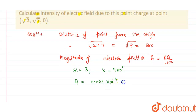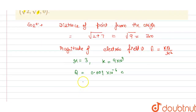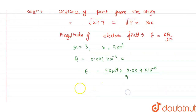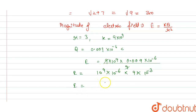From this we get the intensity of electric field E equals 9 × 10⁹ multiplied by 0.009 × 10⁻⁶, divided by r squared, that is 3² = 9. So 9 and 9 cancel out. We get 10⁹ × 10⁻⁶ × 9, and 10⁻⁶ × 10⁻³ gives 10⁻⁹. So 10⁹ multiplied by 10⁻⁹ equals 10⁰, that is 1. Therefore E = 9 Newton per coulomb, and this is the answer.